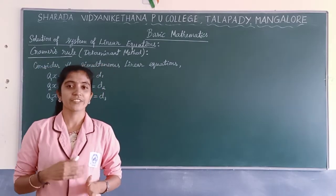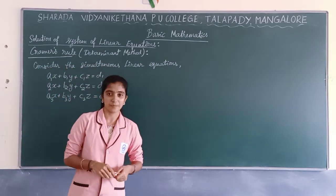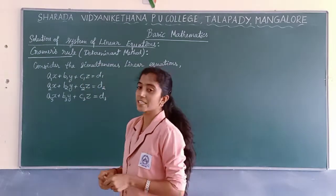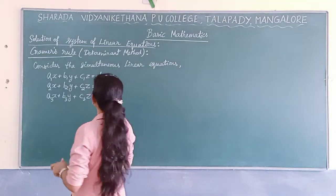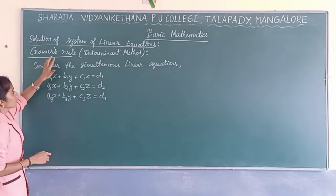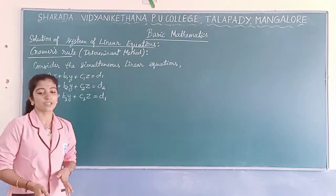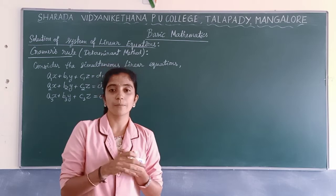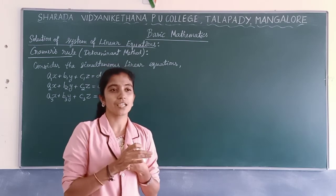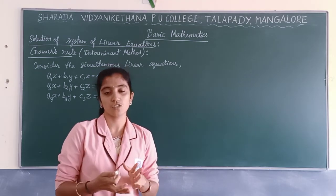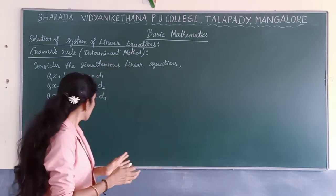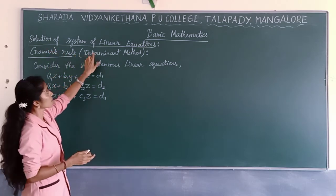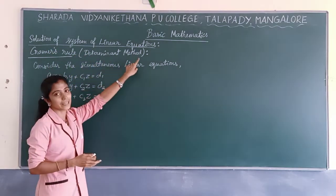Namaste students. We are under the topic matrices and determinants, and today we are going to study about the solution of system of linear equations using Cramer's rule. When two variables are there, we know elimination method or subtraction method. Here, for three variables, we are going to study Cramer's rule, also called the determinant method.